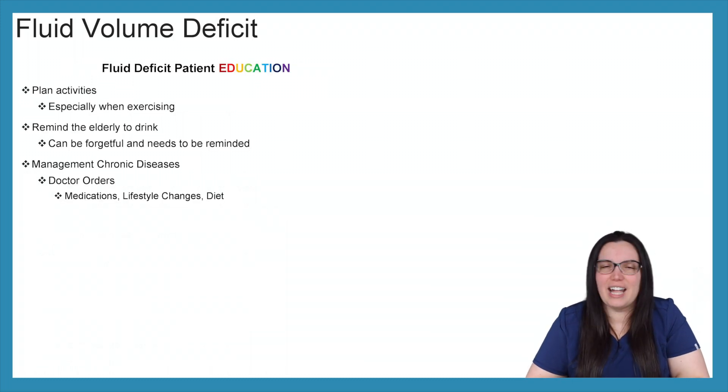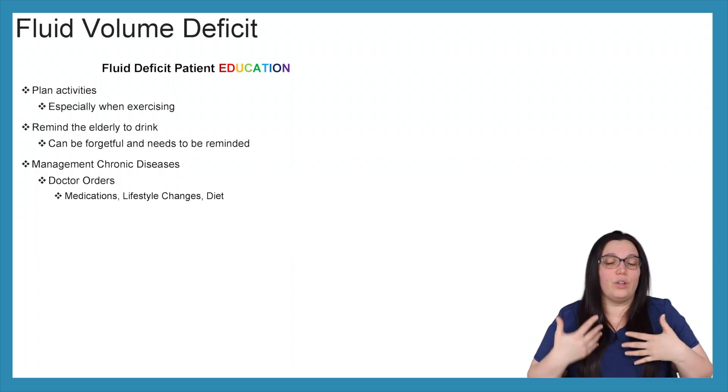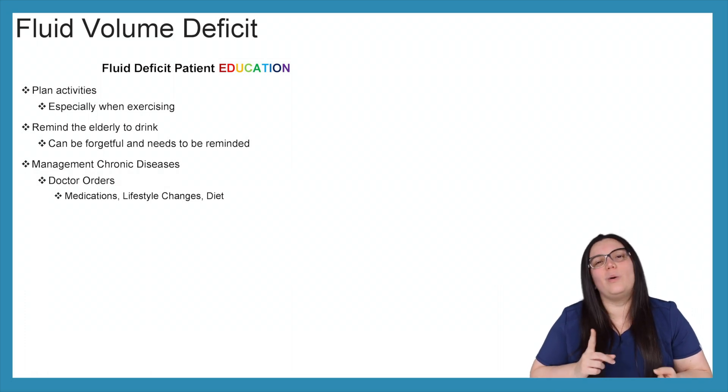So patient education. How are we going to educate these patients to prevent this in the future? Well, planned activities, especially when patients are exercising, they need to make sure that they're drinking water and that they're not excessively exerting themselves to the point where they're having these massive fluid deficits. You need to remind your elderly population that they need to drink. As they get older, the elderly may become more forgetful. Not all elderly people become more forgetful, but some do. So you have to remind them to drink water appropriately and often. Management of chronic diseases. They need to be following their doctor's orders. They need to be taking their medications. If there was any kind of lifestyle changes prescribed to them, they should be following those as well as diet modifications depending on what the doctor prescribed.